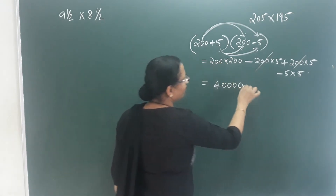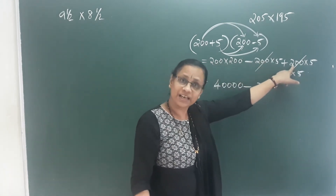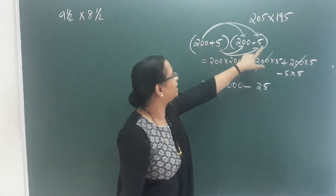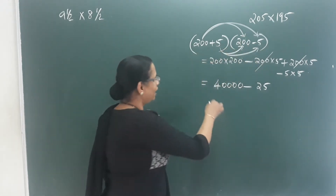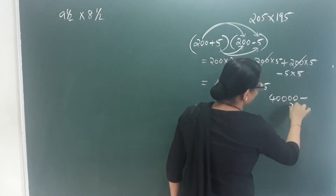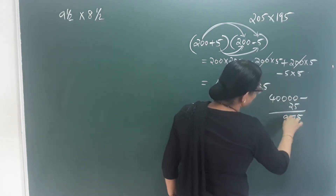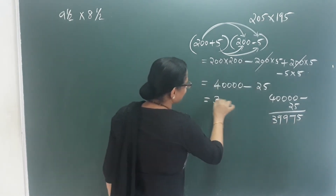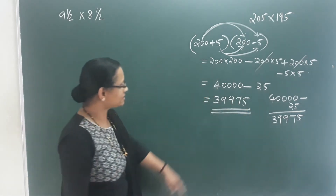We count 1, 2, 3, 4 zeros — so 40,000. Minus 25. Now we cancel and multiply. Here we have a plus b into a minus b equals a square minus b square. So we have 40,000 minus 25, and the digits are 3, 9, 9, 7, 5. The answer is 39,975.